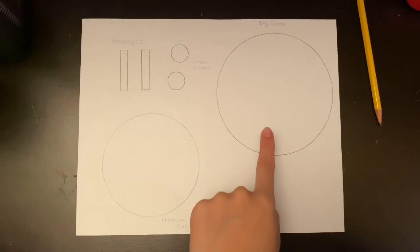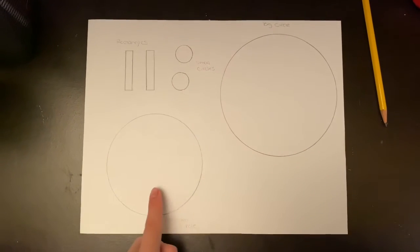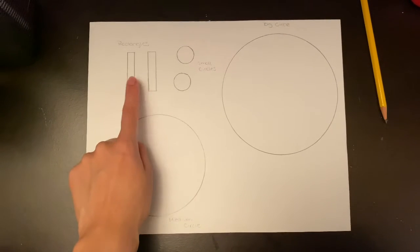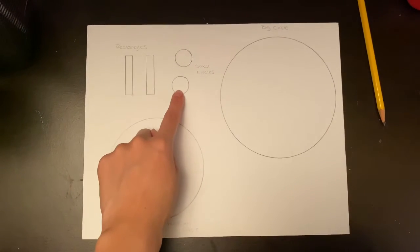So first we're gonna draw our shapes. We're gonna draw a big circle, a medium circle, two rectangles, and then two small circles.